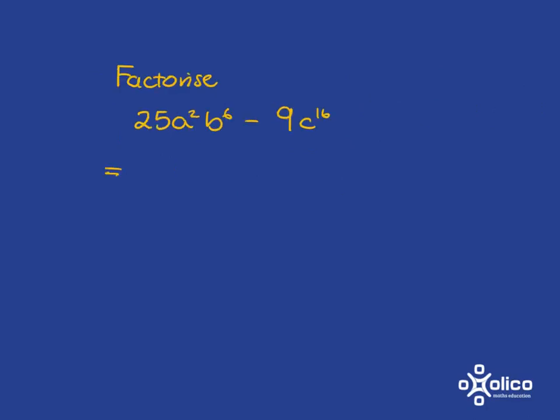We could also be faced with a monster like this one. First check for common factors, but there aren't any here. You've got a's and b's in the first one, and c in the second, and you've got a 25 and a 9. They don't have a common factor. So what we hopefully can see is that we do have the pattern of a difference of two squares here.